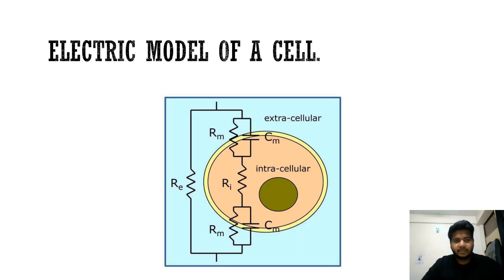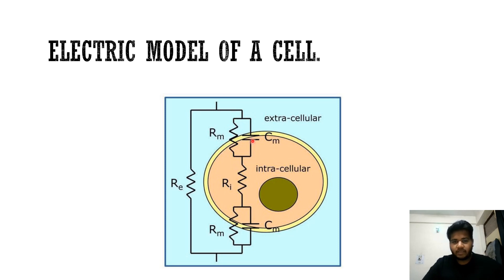Now let us understand the electrical model of a biological cell. As you can see here, this is the electrical model proposed by Webster. In this model, there are various resistances and capacitances: CM represents the capacitance of the cell membrane (shown in yellow), RM is the resistance of the cell membrane, RI is the resistance of the intracellular fluid inside the cell, and RE is the resistance of the extracellular fluid outside the cell.